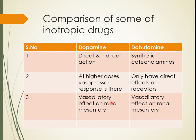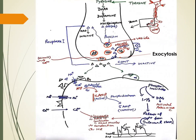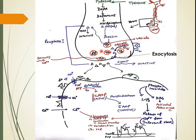Both dopamine and dobutamine have vasodilatory effects at the level of renal and mesenteric vessels. However, dopamine in high doses has vasopressor activity, while dobutamine has only a direct effect on receptors. Dopamine has both direct and indirect effects.